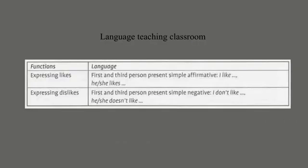In language teaching, coursebooks are often organized around functions. For example, functions expressing likes use first and third person present simple affirmative: 'I like', 'he/she likes'. Functions expressing dislikes use first and third person present simple negative: 'I don't like', 'he/she doesn't like'. Functions are often taught in coursebooks together with the grammar of their main exponents.